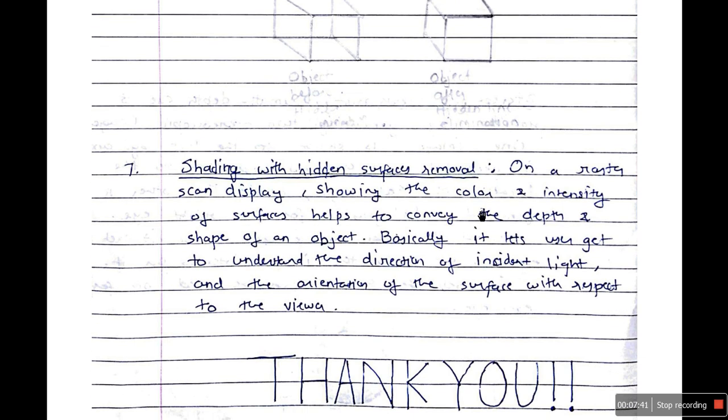Next technique is shading with hidden surface removal. On a raster scan display, showing the color and intensity of surfaces helps to convey the depth and shape of an object. Basically, it lets the user understand the direction of incident light and the orientation of the surface with respect to the viewer. When you do shading, you let the user know on which side there is source of light, on which side the shadows are falling, and it lets the user know what is the depth and the orientation of the object that is kept. And this you do, of course, with the hidden surface removal.